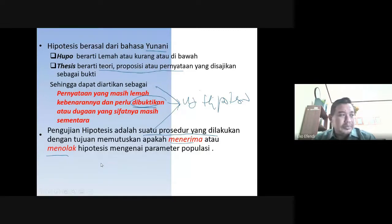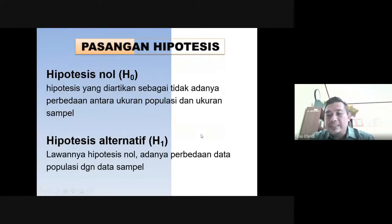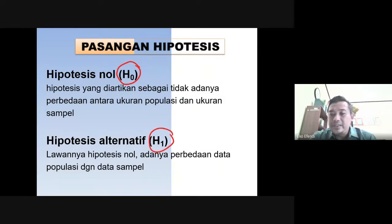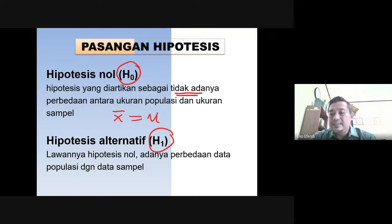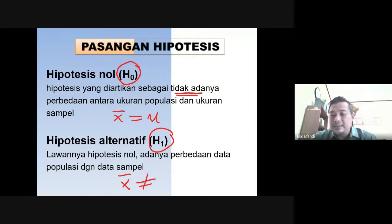Dalam statistik, hipotesis itu dinyatakan dengan pasangan pernyataan, biasanya disimbolkan dengan H0 dan H1. H0 ini adalah hipotesis nol dan H1 adalah hipotesis alternatif. H0 terkait pernyataan bahwa tidak ada perbedaan antara ukuran populasi dan ukuran sampel — jadi ukuran rata-rata populasi itu sama dengan rata-rata sampel. Sedangkan hipotesis alternatif, ini adalah perbedaannya, sehingga rata-rata sampel itu tidak sama dengan rata-rata populasi.